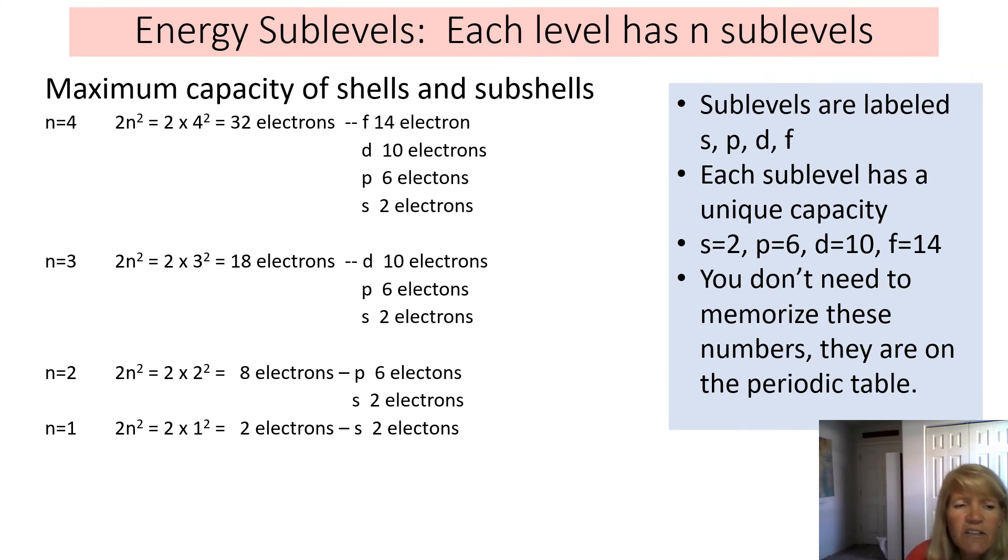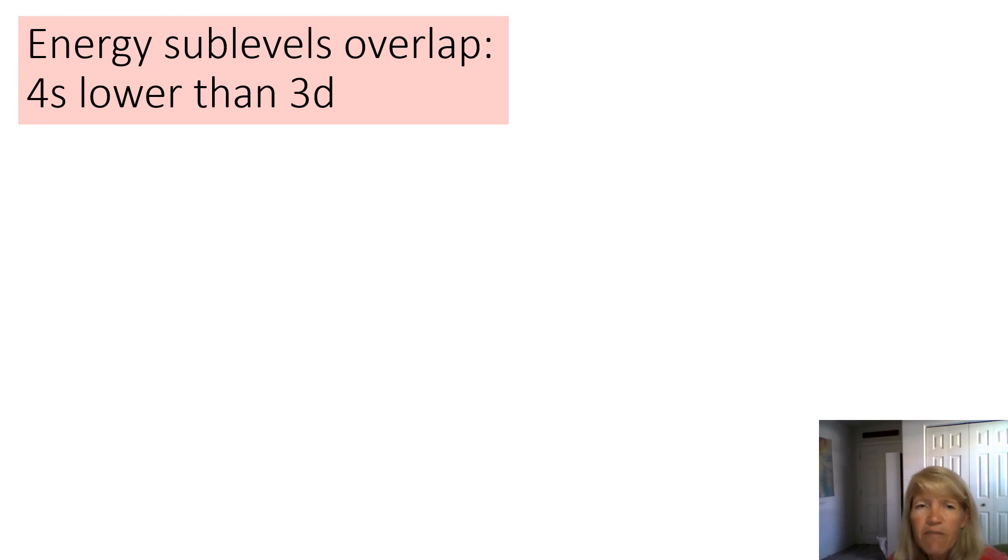So each level, so n equals 1, will have one sublevel. So it just has the S. So n equals 1 has an S, which has two electrons. That's how many the whole shell holds. When we go to n equals 2, this one will have two sublevels, S and P. And notice these add up to 8, which is the total that it can hold. We get to n equals 3, we have S, P, and D. And we add those up, and we get 18, which again is our total. When we get to n equals 4, we have four sublevels, S, P, D, and F. And those will add up to 32. So you always start with the S. Everybody has S. And each level higher has one more sublevel as well.